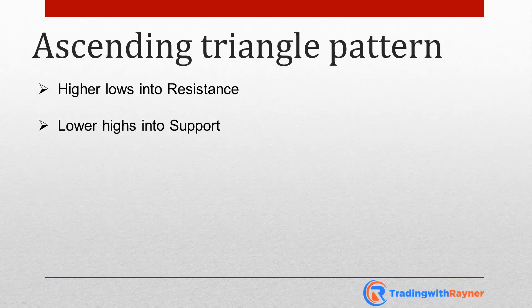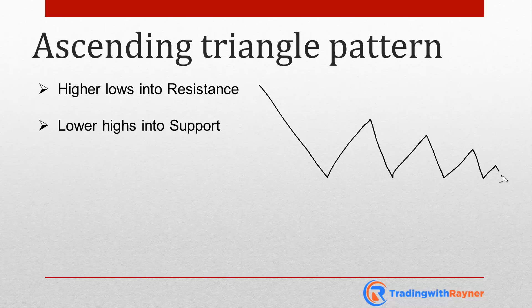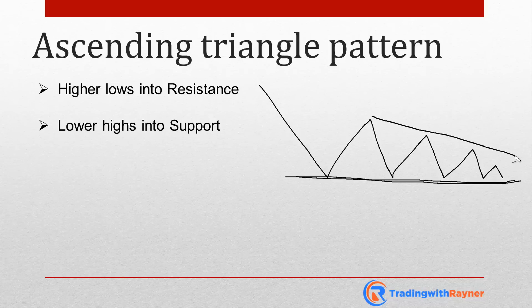On the other hand, the descending triangle is simply the opposite. You see lower highs coming into support. This is an area of support, and you can see these lower highs coming into support. So this is what an ascending and descending triangle looks like.